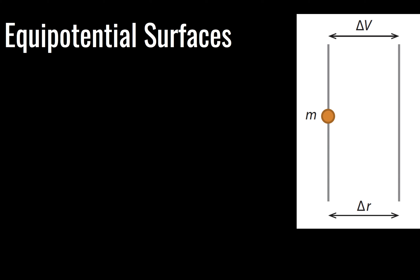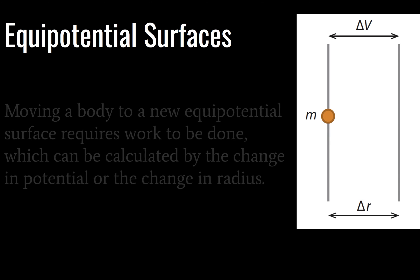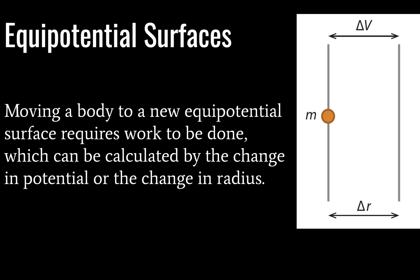So when we look at our surfaces, when we move a body to a new equipotential surface, we have to do work, and that work can be calculated by the change in potential or the change in radius. Remember that they are closely related. That radius there is just the distance center to center between our test charge or test mass and the object that we are testing.